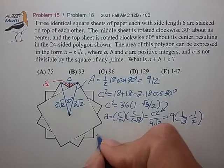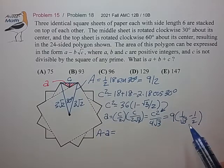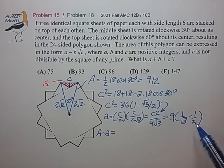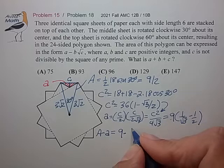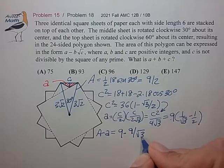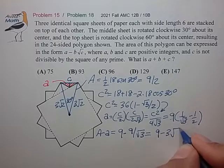Now let's subtract big A minus small a. 9/2 minus 9(1/√3 - 1/2) gives us 9 - 9/√3, which is 9 - 3√3.